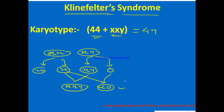Turner Syndrome will be discussed in the next video on my YouTube channel. So Klinefelter Syndrome has the sex chromosome composition of XXY, meaning there is one extra chromosome, making the total 47 chromosomes.